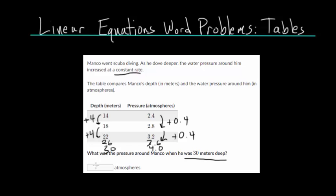So we can say that 4.0 is our answer here. So basically, when you're given a table and you know it's a linear equation, you want to figure out what are you jumping by for our independent variable, our depth. So in this case, we're jumping by 4 every time.